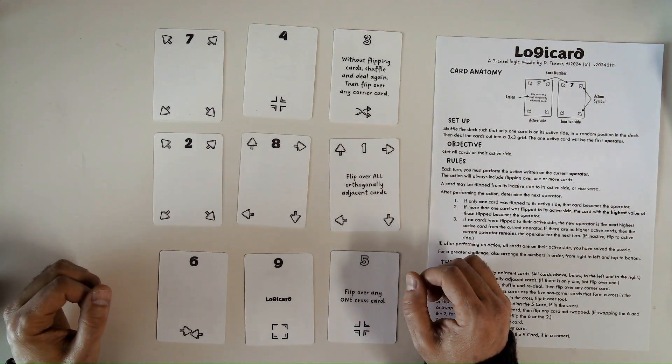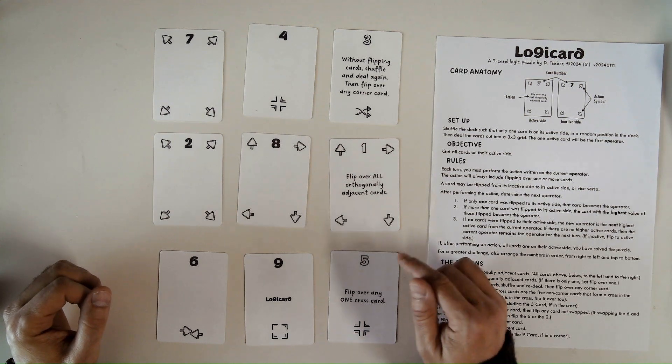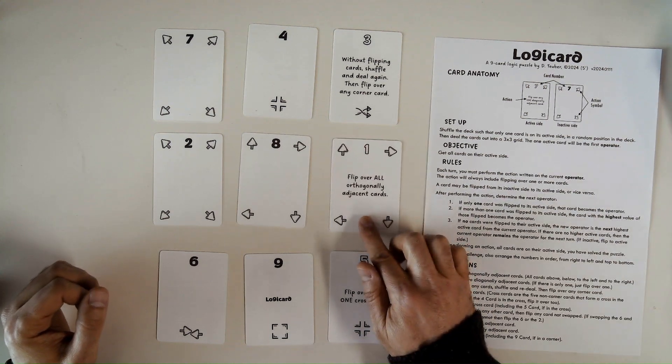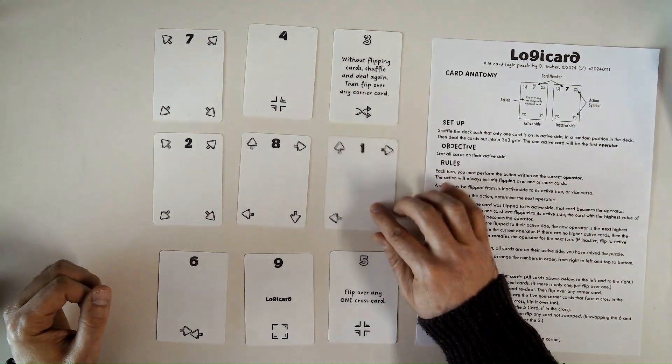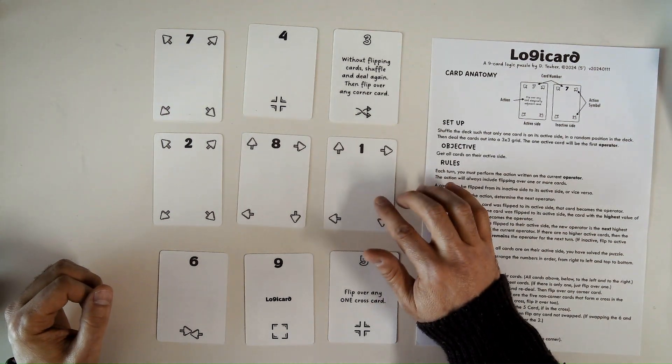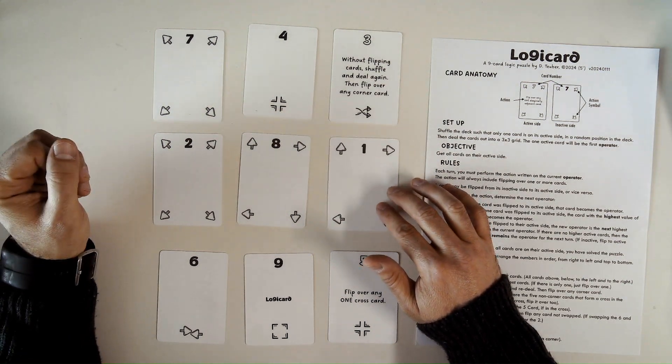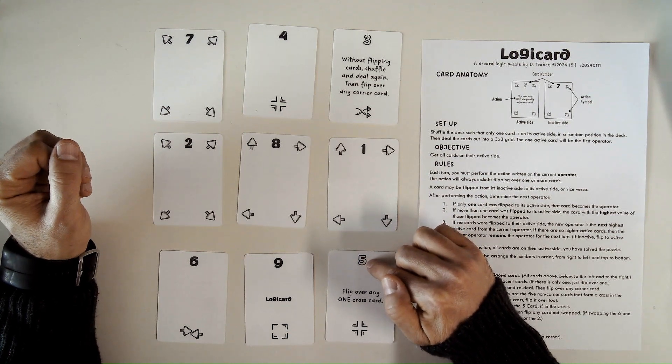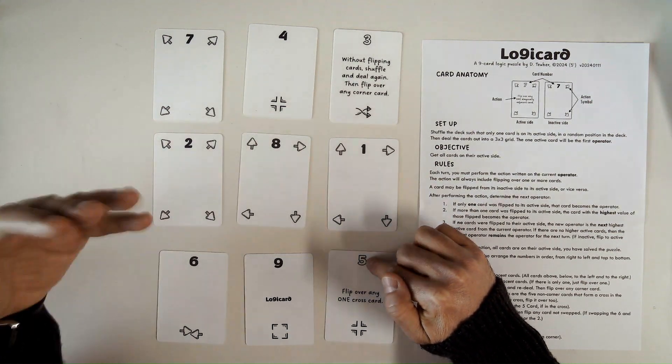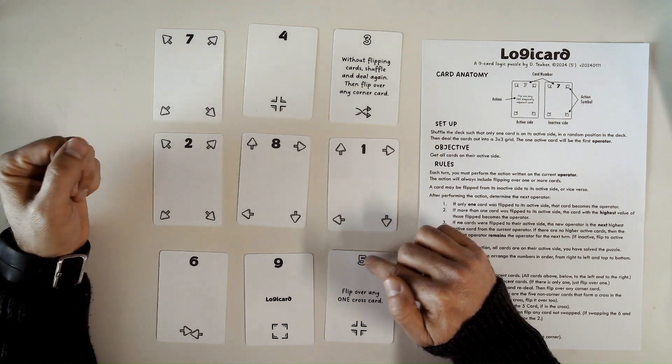Let's go ahead and flip over this one. So I don't have to flip it to the active side, but I can flip one over to the inactive side. On this turn, no cards were flipped over to their active side. So in this case, 5 was the current one. I would take the next highest card that's active, and that would be the new operator. So 6, 7, 8, 9. I would look at one of those cards.